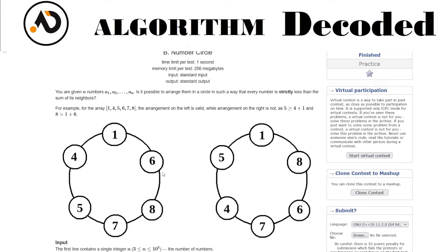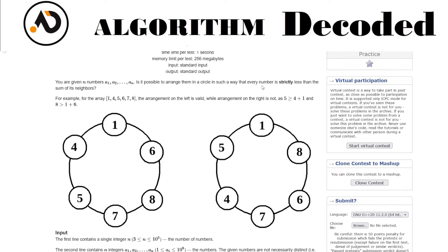For example, consider 1, 4, 6: one's neighbors are four and six, sum is ten, and one is less than ten. Four's neighbors are one and five, sum is six, and four is less than six. Seven's neighbors are five and eight, five plus eight is thirteen, greater than seven. But for the arrangement one, five, eight: five's neighbors are one and four, sum is five. Five is not strictly less than five, so this arrangement is not valid.